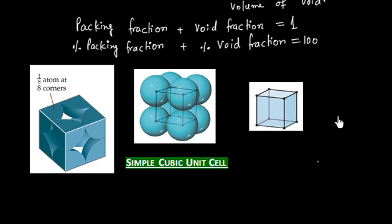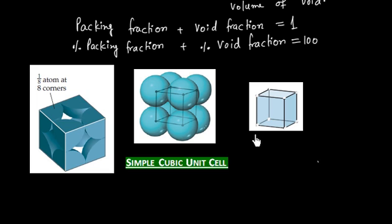Now let us consider the case of a simple cubic unit cell. In a simple cubic unit cell, we have 8 atoms at the corners — 1, 2, 3, 4, 5, 6, 7, 8. So we have atoms at all corners.